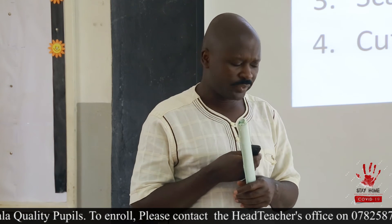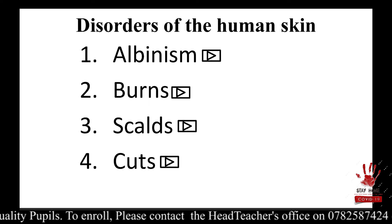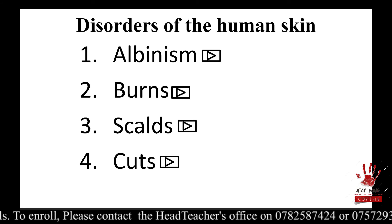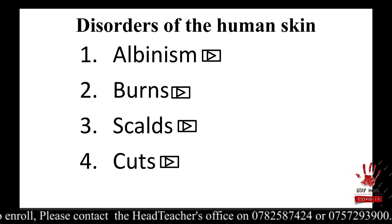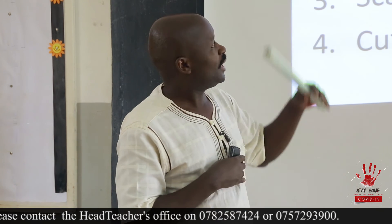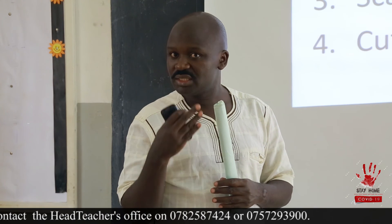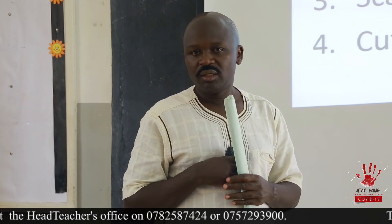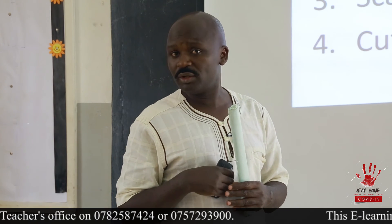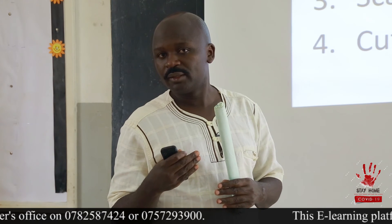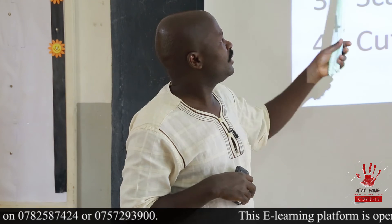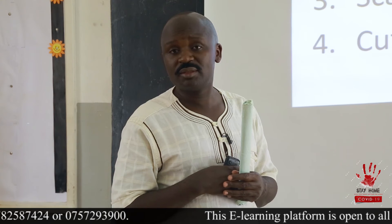So these are disorders of the human skin. A disorder is not caused by a germ and is not infectious. For example, if you have albinism, burns, scalds, or cuts — even if you share something with or sit next to a person with such conditions, you will not get them. That is what we mean by disorders. But a disease like scabies — if you get in contact with somebody having scabies, you will get it. A disease is infectious or communicable, while disorders are not communicable.